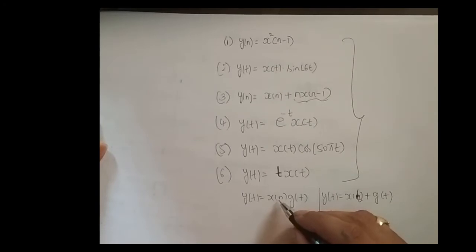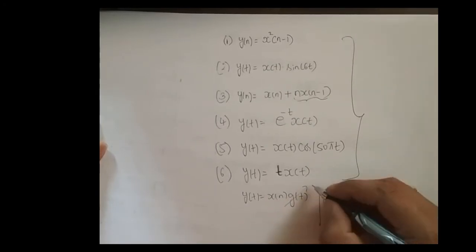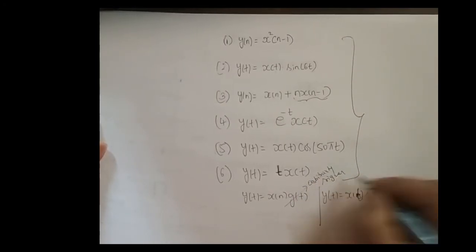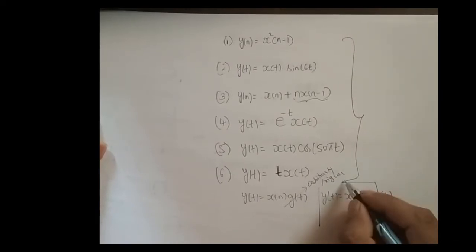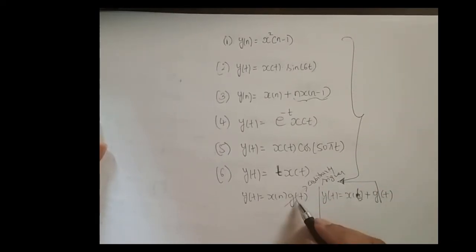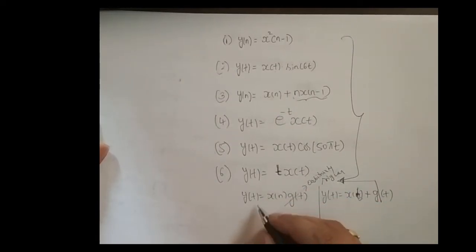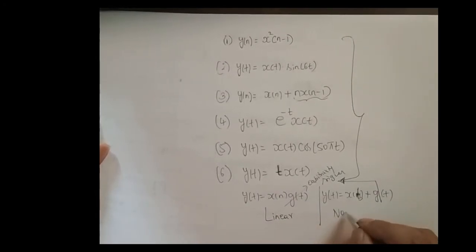There is a trick here. As we know, x(n) is the input signal whereas g(t) can be any arbitrary signal. Even here also, g(t) can take any signal. From the solution of this system, this was actually a linear system and this was actually a non-linear system.